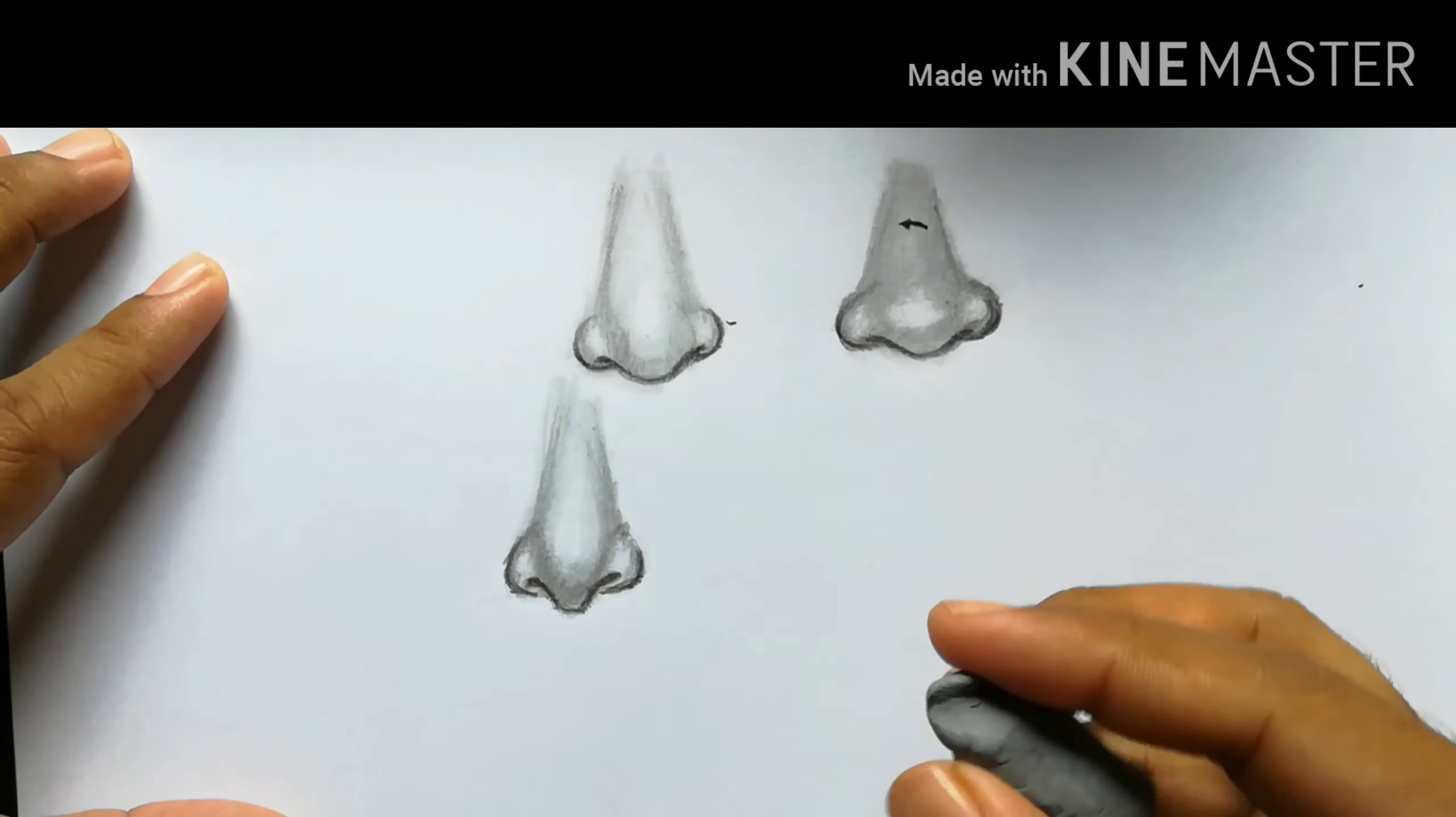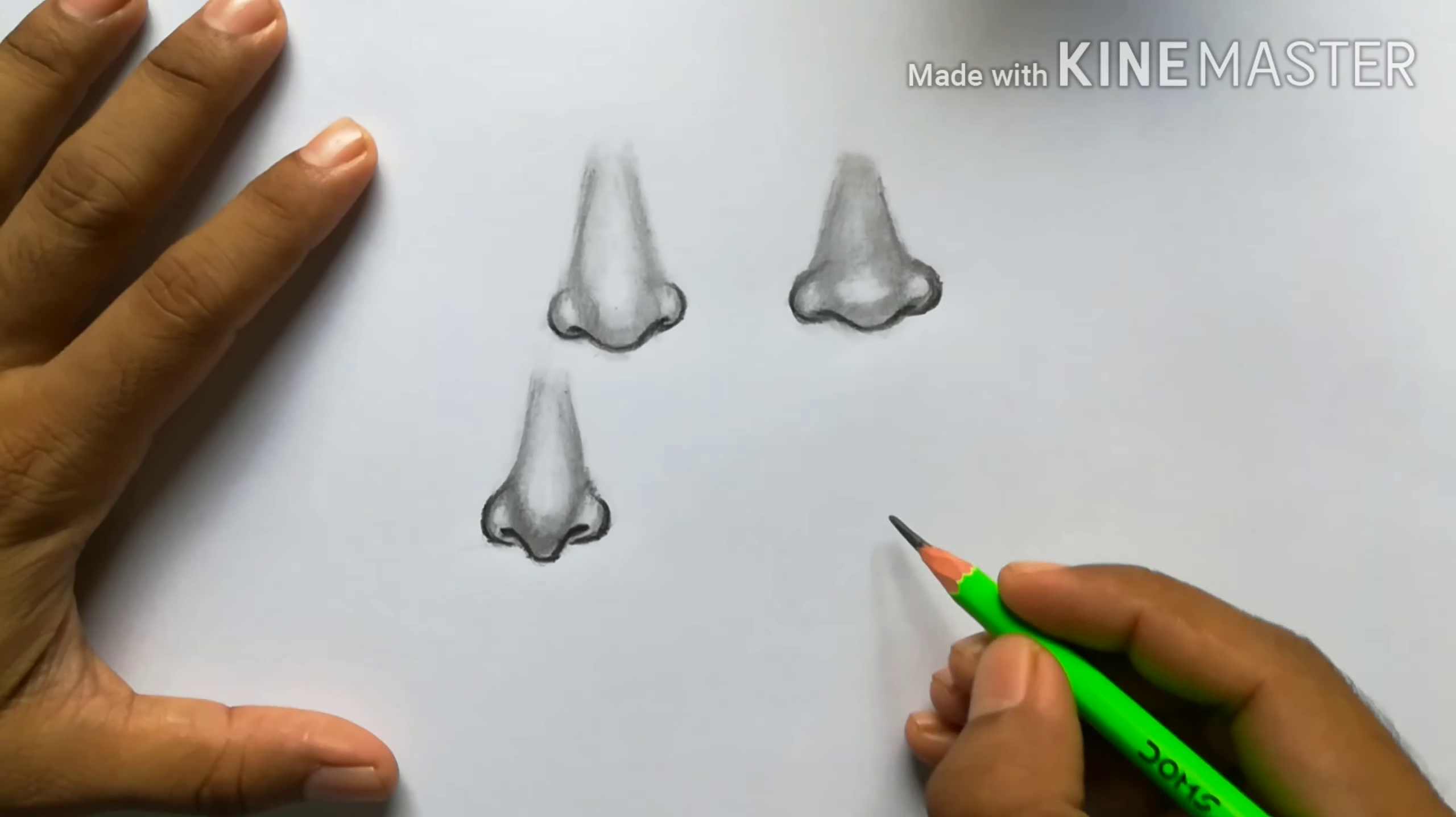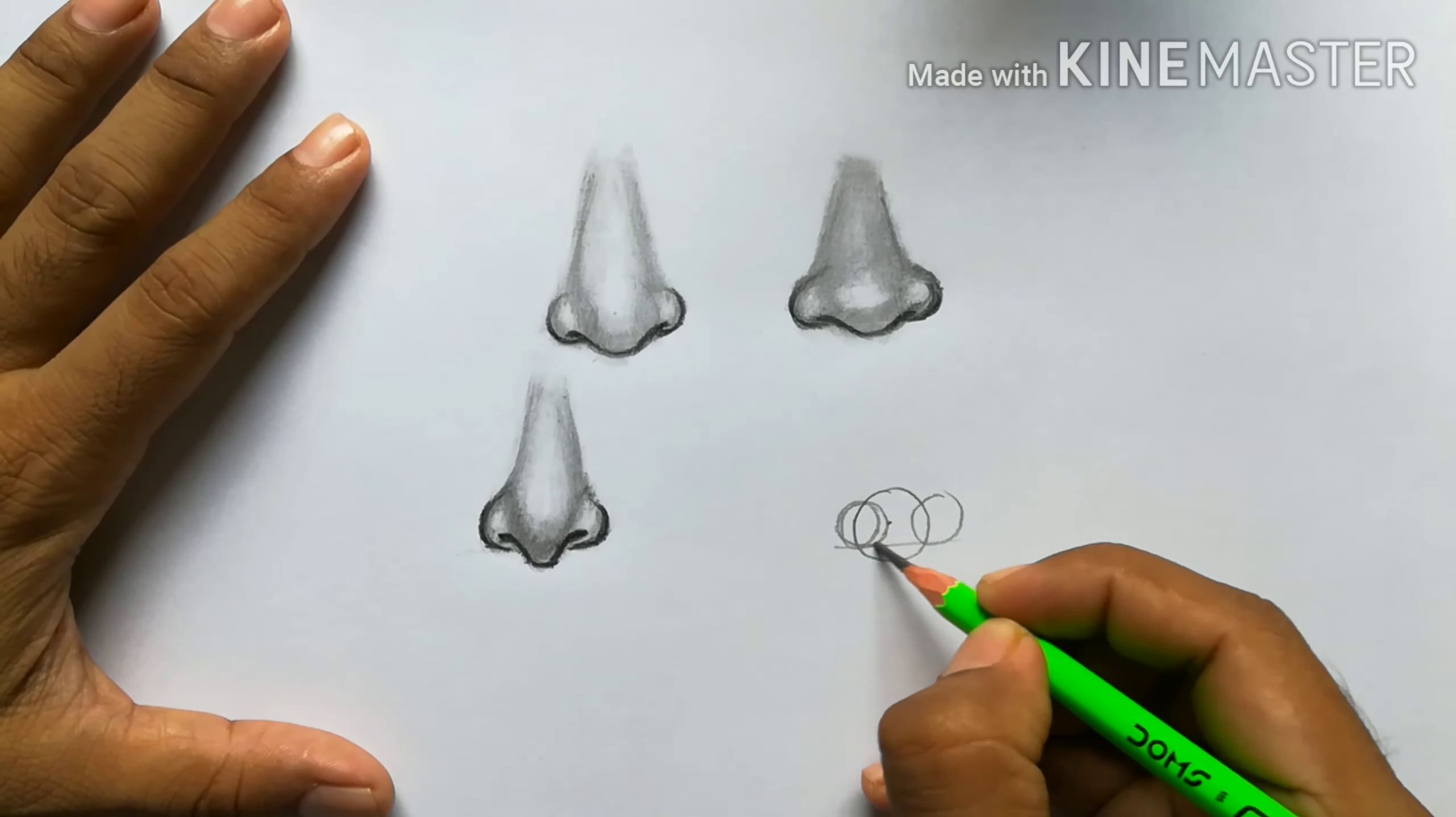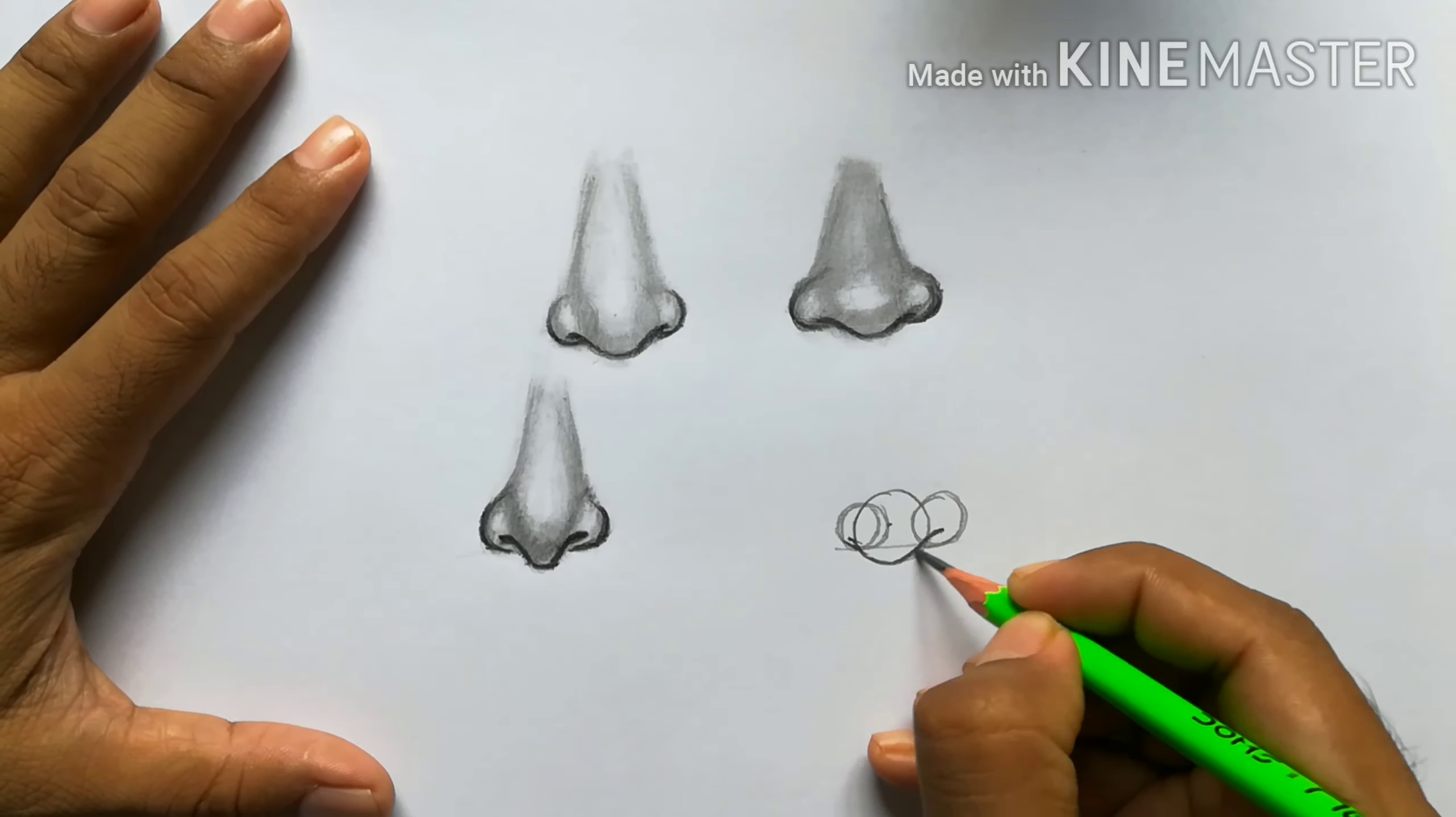As you can see, these three noses are all front view noses. Now we're going to draw two side view noses. So just follow that. Similarly, I'm drawing a circle in the center and then two smaller circles on both sides.